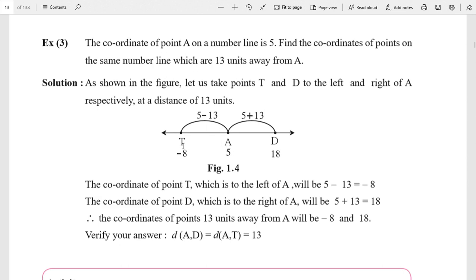Direct answer: for subtraction and addition. The coordinate of point T, which is left of A, will be 5 - 13, that is equal to -8. And the coordinate of point D, which is to the right of A, will be 5 + 13, that is equal to 18.